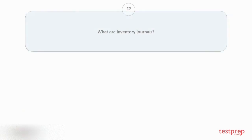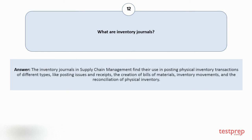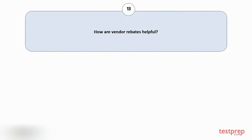Question number 12: What are Inventory Journals? The inventory journals in supply chain management find their use in posting physical inventory transactions of different types, like posting issues and receipts, the creation of bills of materials, inventory movements, and the reconciliation of physical inventory.